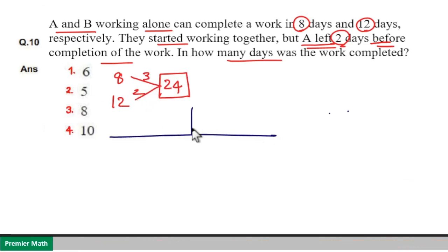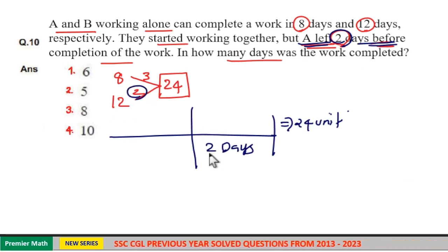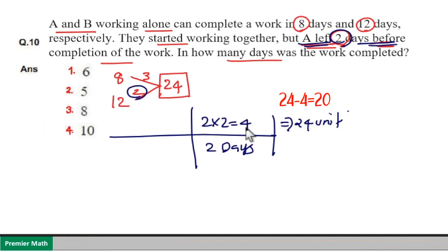Now total work is 24 units. Here A left 2 days before the completion of the work, which means in 2 days B alone worked. So B completes 2 units of work in a day, so in 2 days 2 into 2, 4 units of work he completed.